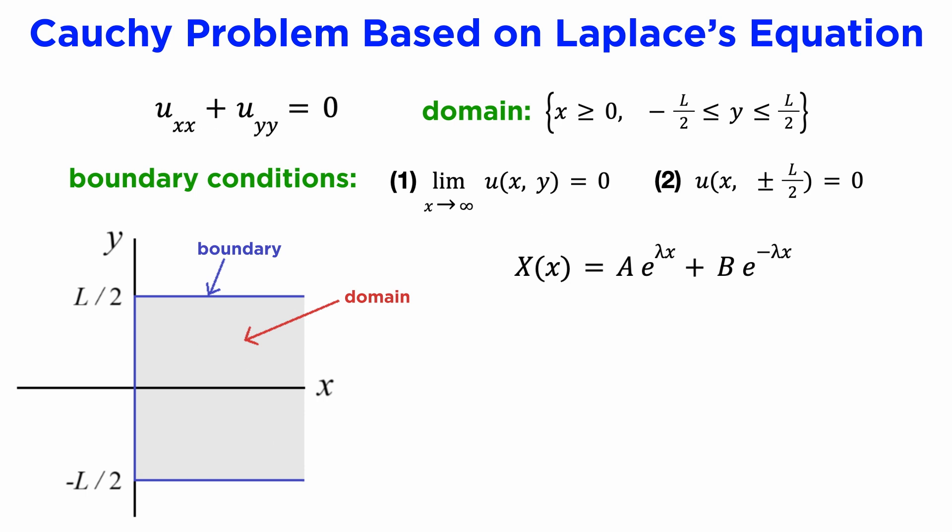We can use the first condition to know that our function of x must be exponential, because that's the only way to get it to decay to zero, as trig functions don't decay, and so we will choose the positive separation constant lambda squared.